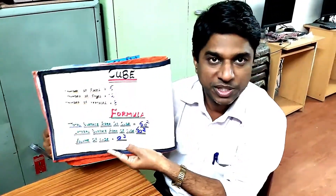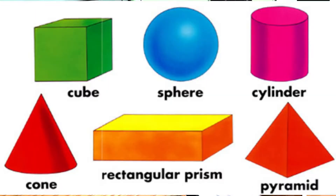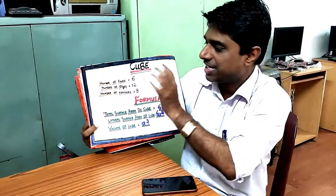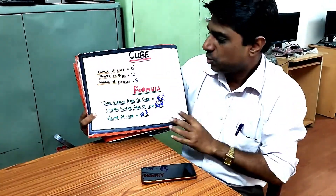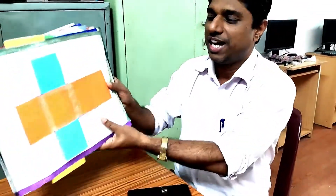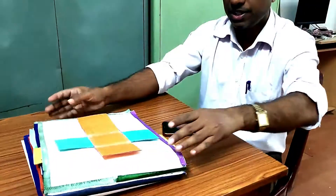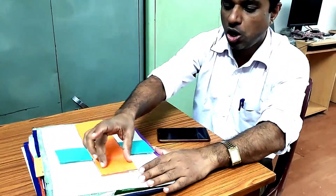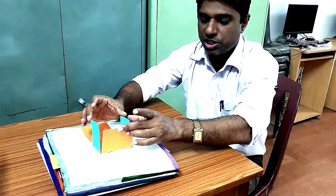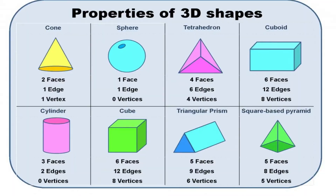Coming to the first one, it's a cube. Now we all know about a cube — we have seen the Ludo dice, all the sides are equal. Now here, the name of the faces: it has six faces, 12 edges, and eight vertices. I will show you a diagrammatic of the cube. All the faces are equal. I will show you in slow motion — here are the sides, I am just folding it and making it as a cube.